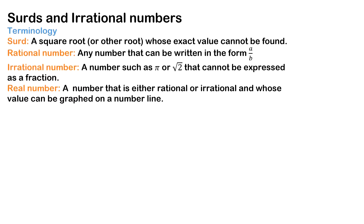In this video we'll be introducing you to surds and irrational numbers. Before we begin, there's some terminology to go through. A surd is a square root whose exact value cannot be found. We have rational numbers, which are any number that can be written in the form a over b. It doesn't have to be a fraction — for example, two, three, six are all rational numbers. An irrational number is a number such as pi or root two that cannot be expressed as a fraction. Real numbers are numbers that are either rational or irrational and whose value can be graphed on a number line.